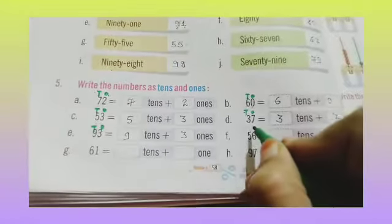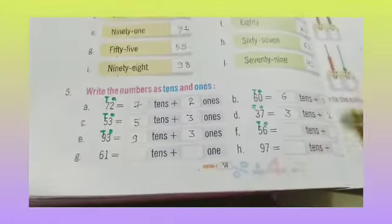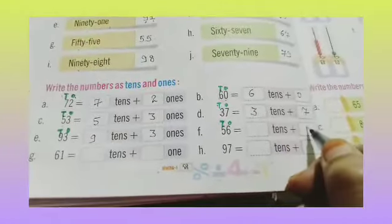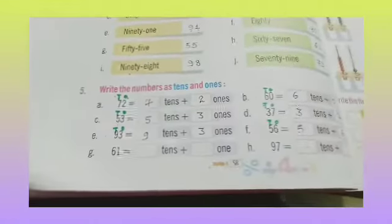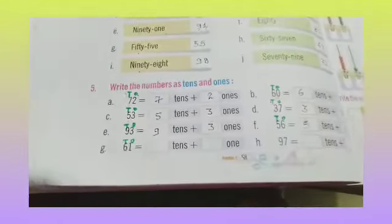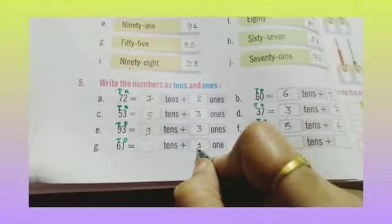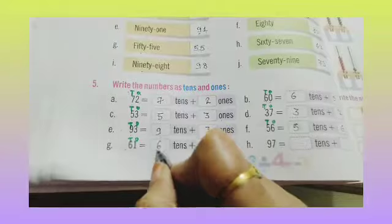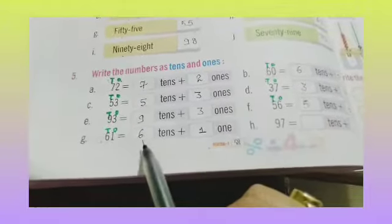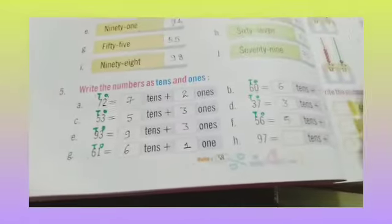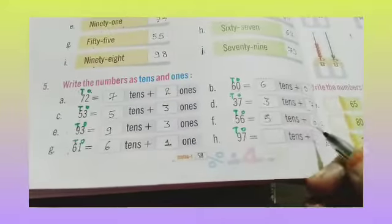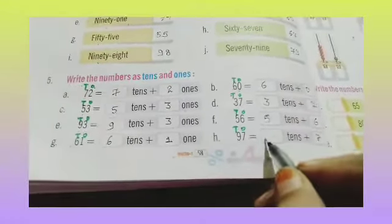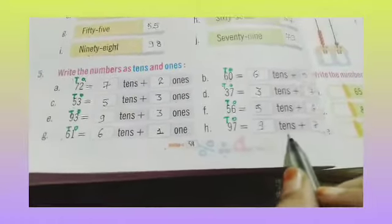Part F: 56 — ones and tens. 6 at the ones place and 5 at the tens place. So 5 tens plus 6 ones. 61 — 1 at the ones place and 6 at the tens place, so 6 tens plus 1 one. 97 — 7 at the ones place and 9 at the tens place, so 9 tens plus 7 ones.